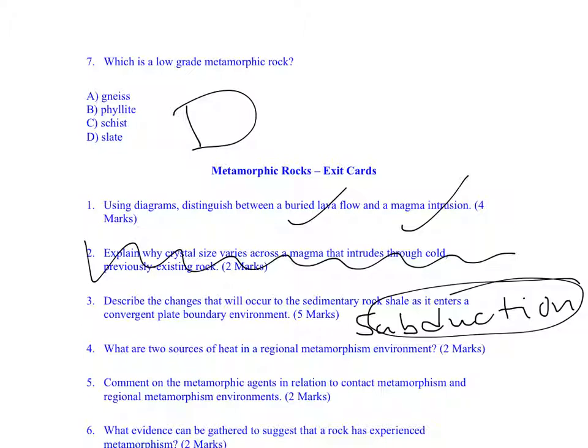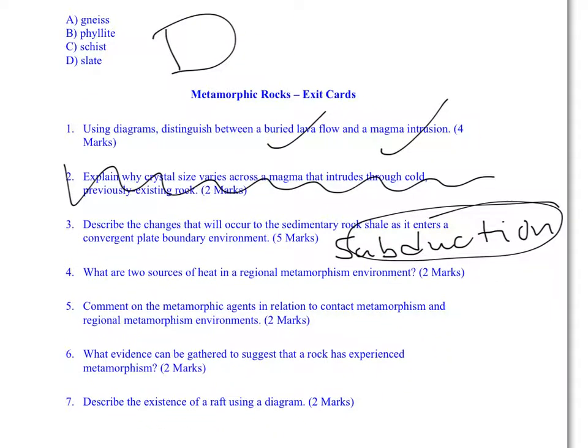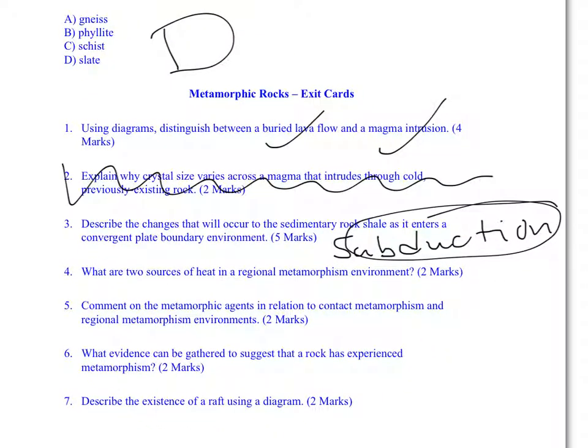The next question I'm going to modify a little bit. What are the two sources of heat in a regional metamorphism environment? The biggest source of heat is geothermal gradient. You just got to know that as you go down deep inside a mountain system, it just gets warmer, just like if you go down inside of a mine.